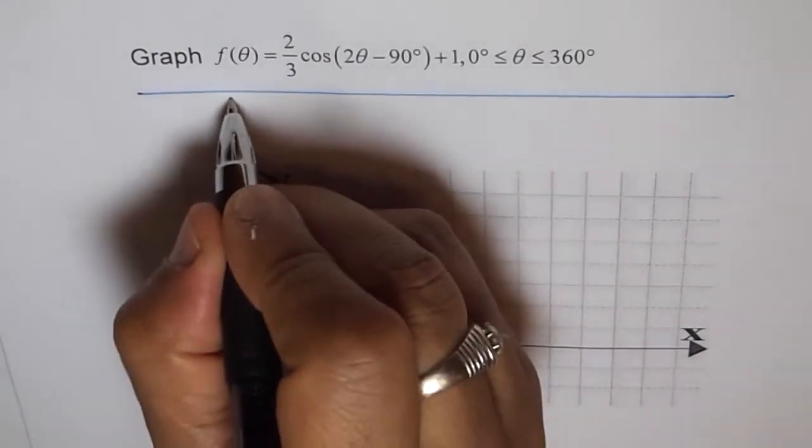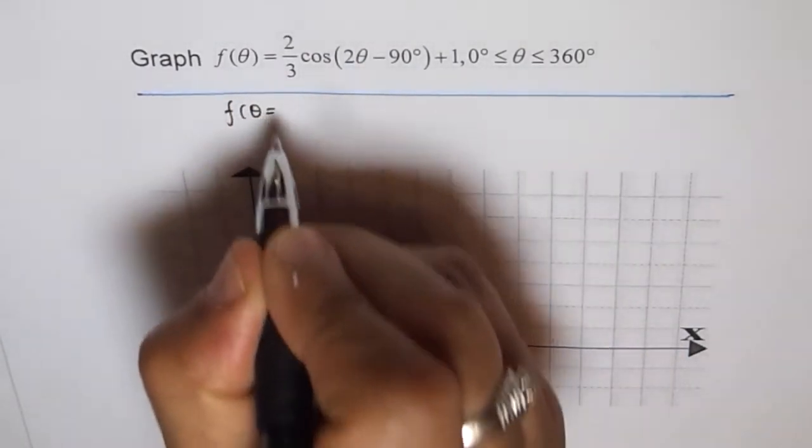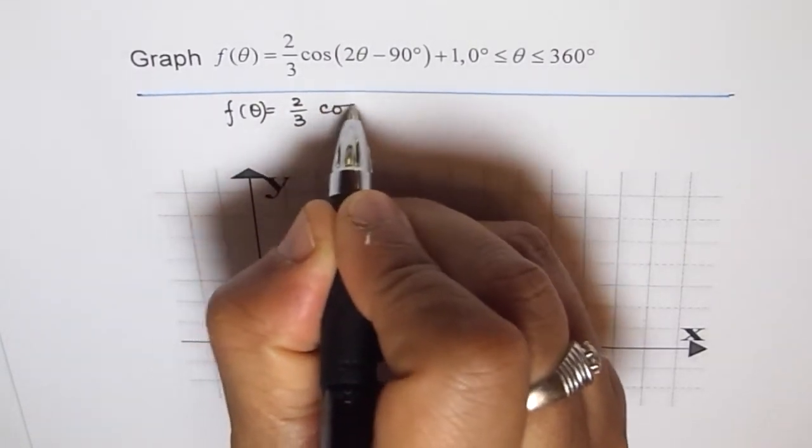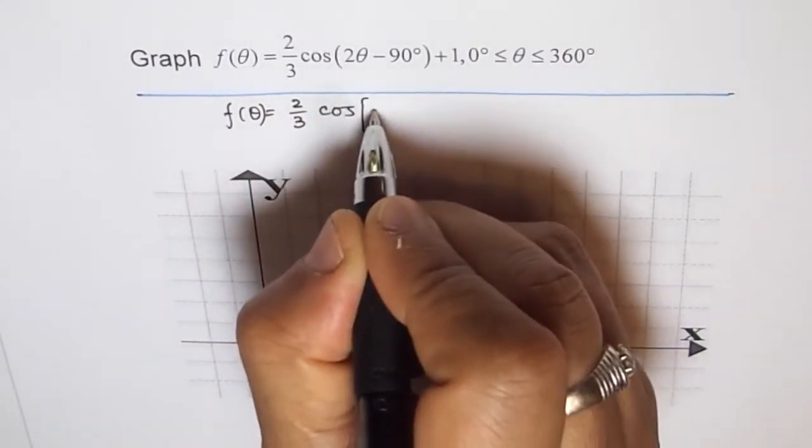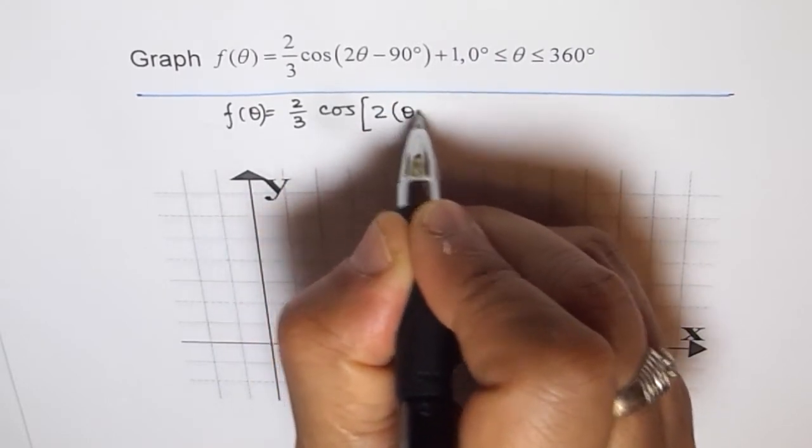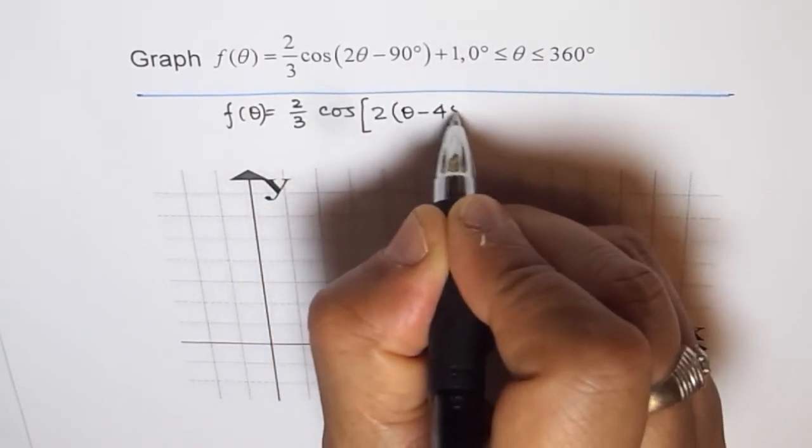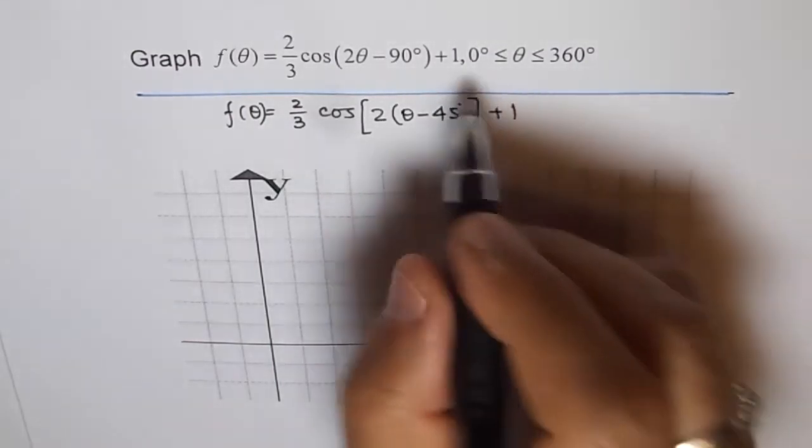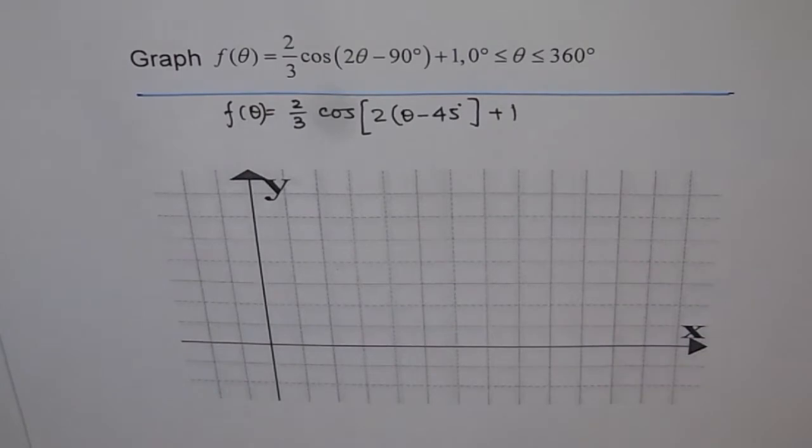We can factor this out and write f of theta equals 2 over 3 cos of 2 times theta minus 45 degrees plus 1. And we are working between 0 to 360 degrees.